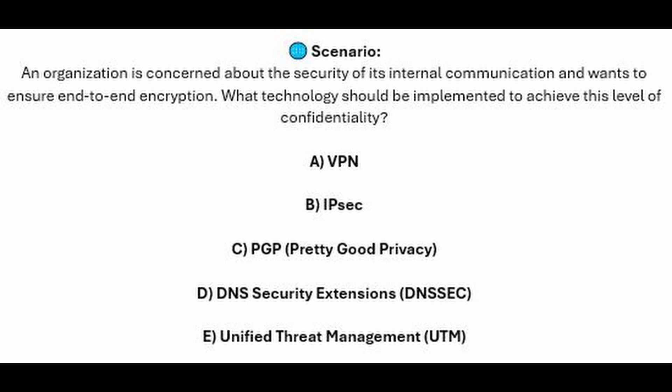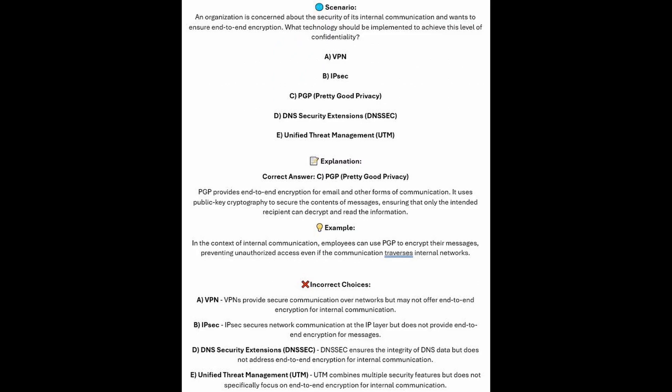You now have 5 seconds. And the correct answer is C, PGP or Pretty Good Privacy. PGP provides end-to-end encryption for email and other forms of communication. It uses public key cryptography to secure the contents of messages, ensuring that only the intended recipient can decrypt and read the information.